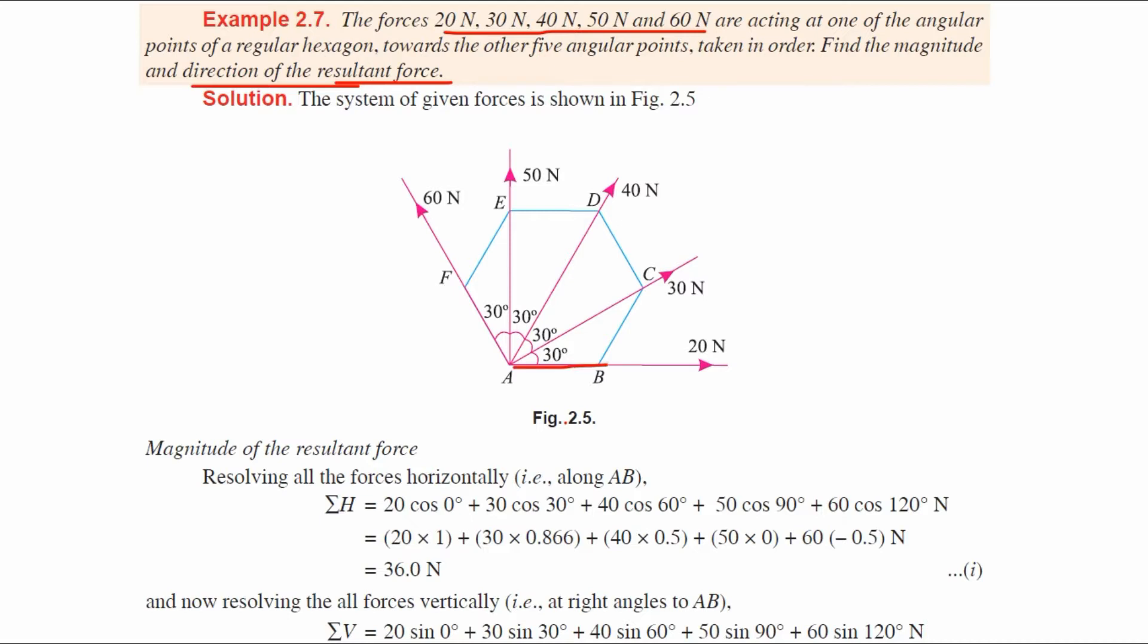A to B is 20 Newton. It forms a hexagon, so every force has a 30 degree angle. A to B is 20 Newton, A to C is 30 Newton, A to D is 40 Newton, A to E is 50 Newton, and A to F is 60 Newton. We connect all the forces A, B, C, D, E, F, and A to form the hexagon.